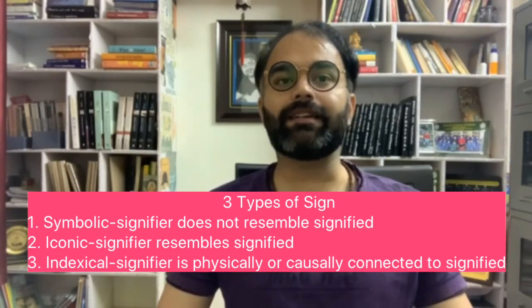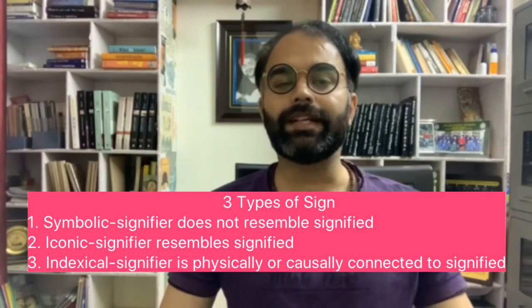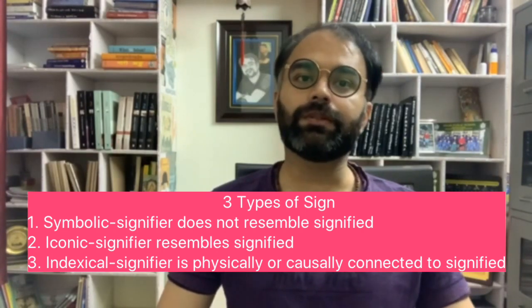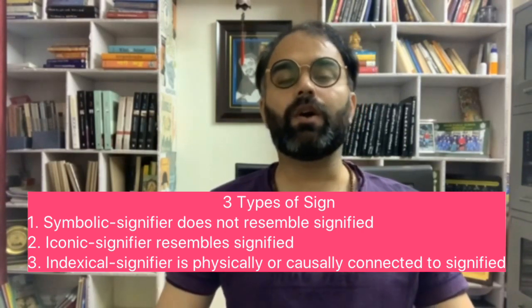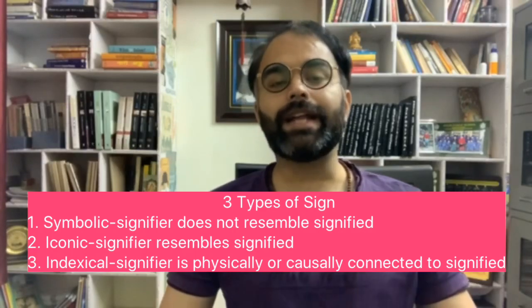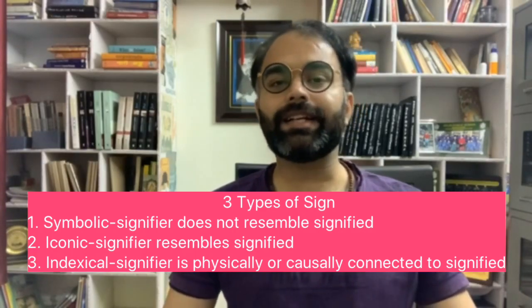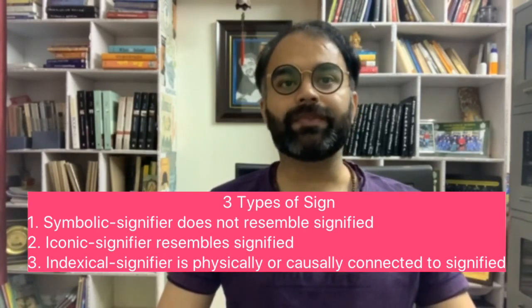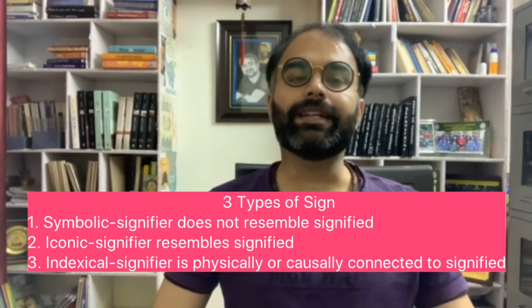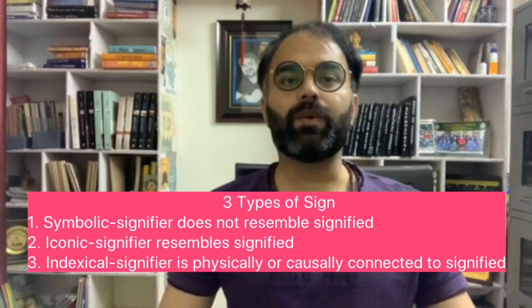But when the signifier resembles the signified, it is iconic — as a photo, a portrait, a cartoon, or onomatopoeic sounds and alike. And when the signifier is directly connected physically or causally to the signified, it is indexical — as smoke and fire, or a knock on the door.